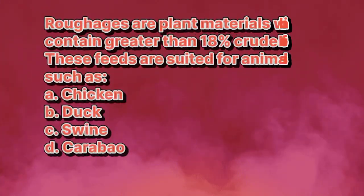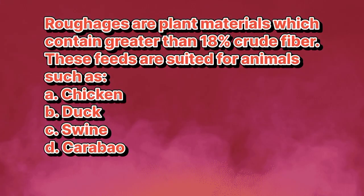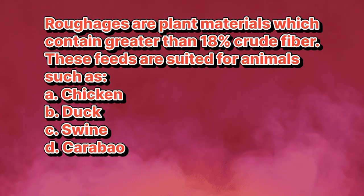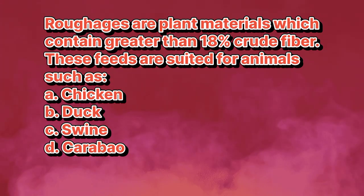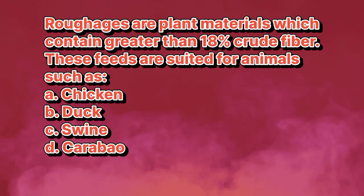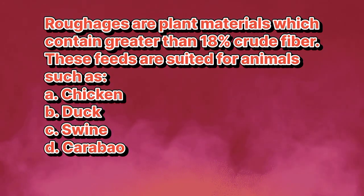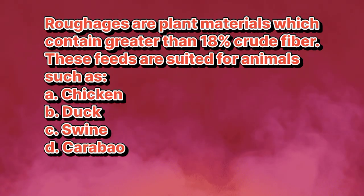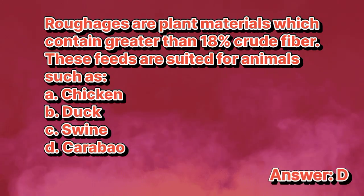Roughages are plant materials which contain greater than 18% crude fiber. These feeds are suited for animals such as: A. Chicken. B. Duck. C. Swine. D. Carabao. The answer is letter D.